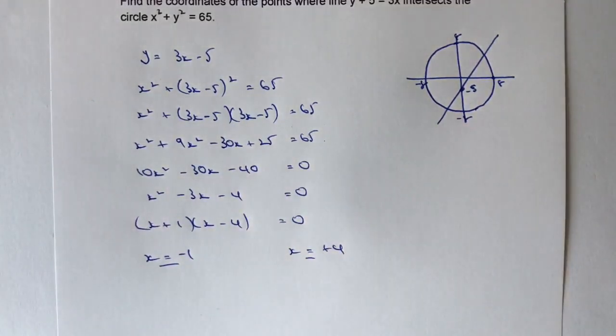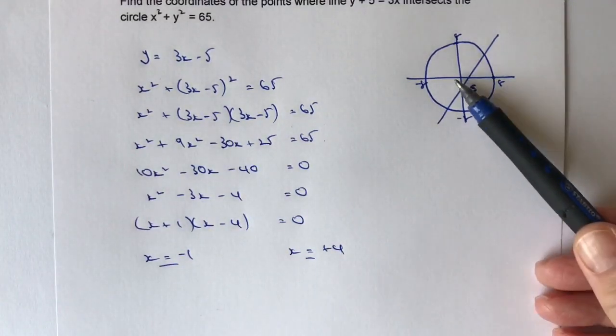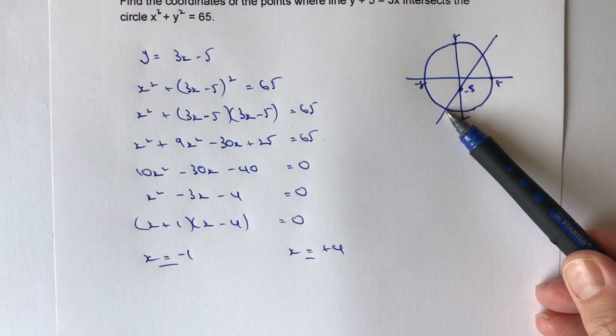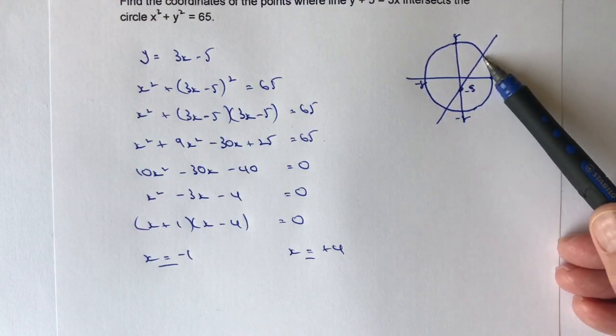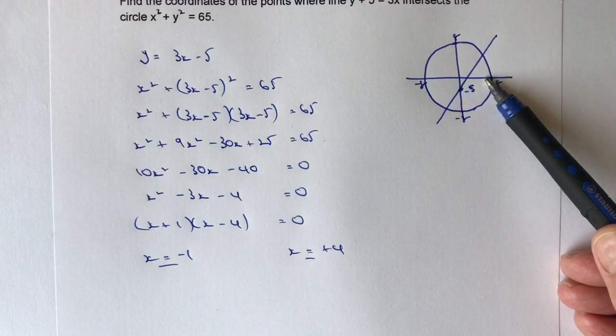So we've got our two values of x, which are going to be this value along here is going to be minus 1. And this value along here is an x value of plus 4.